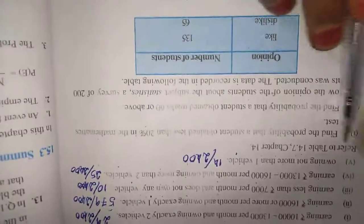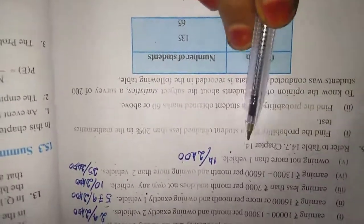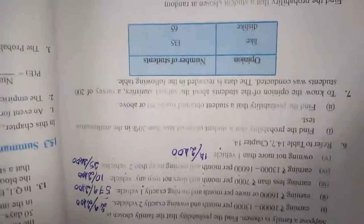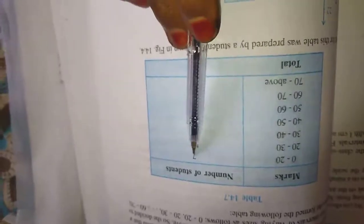Next one is refer the table 14.7 chapter 14. Now we will move to that chapter. They are telling us to refer this table only. In this table, they are giving the marks of the students and how many students got this mark. 0 to 20, there are 7 students. 20 to 30, 10 students. Like that, they formed the table. Now we will measure.